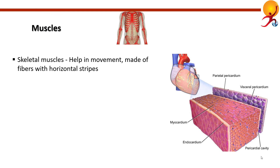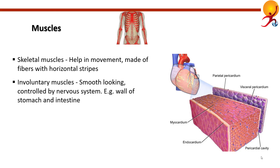Skeletal muscles can contract quickly and powerfully but they tire easily and have to rest between workouts. Involuntary muscles are also made of fibers but they look smooth because they are not striated, and they are controlled by the nervous system automatically. Examples include the wall of the stomach, the intestine, and the walls of blood vessels. Smooth muscles take longer to contract than skeletal muscles but they can stay contracted for a long time because they don't tire easily.